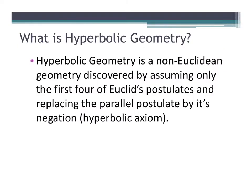What is hyperbolic geometry? Hyperbolic geometry is a non-Euclidean geometry discovered by assuming only the first four of Euclid's postulates and replacing the parallel postulate by its negation, which is called the hyperbolic axiom.